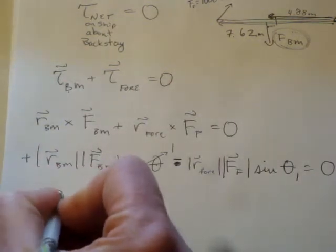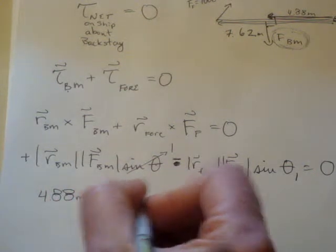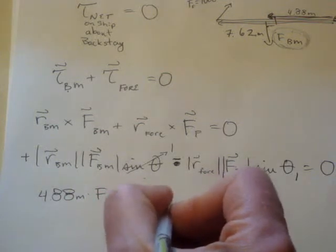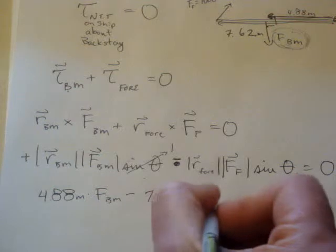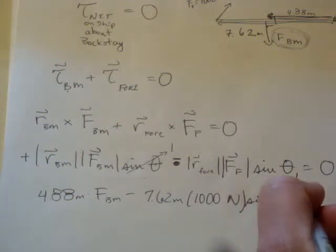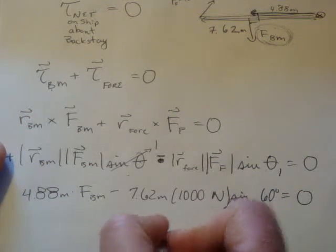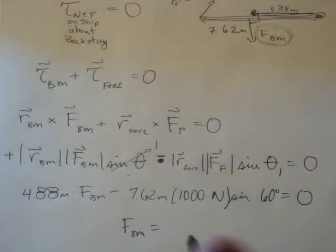We plug in some numbers: 4.88 meters times the force of BM, minus 7.62 meters times 1,000 newtons times sine of the angle between them, which is 60 degrees, equals zero. We can solve for the force of BM. I'm not sure what that's going to be, but let me plug that into my calculator to see if we get a number that makes sense.